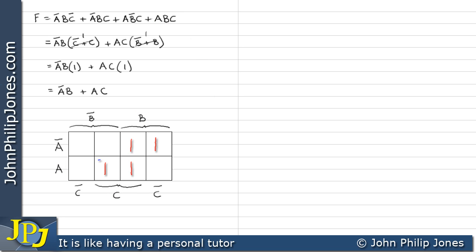Of course the next thing to do is loop the ones appropriately. So I loop those two ones there and I'm also going to loop these two ones. Now that's sufficient, we've looped all the ones with as few loops as possible. Now this particular loop is in the A and the C area so it's A and C. And this one is in the not A and the B area so that's not A and B.